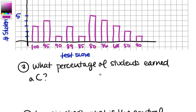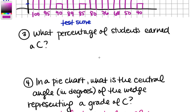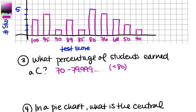Now let's move towards making a pie chart. First question: what percentage of students earned a C? Remember, C is from 70 to 79.9999, less than 80. Looking at our chart, there was only one score in the C range — 76 — and four students scored it, so there were four C's. We want to find that as a percentage of the total.